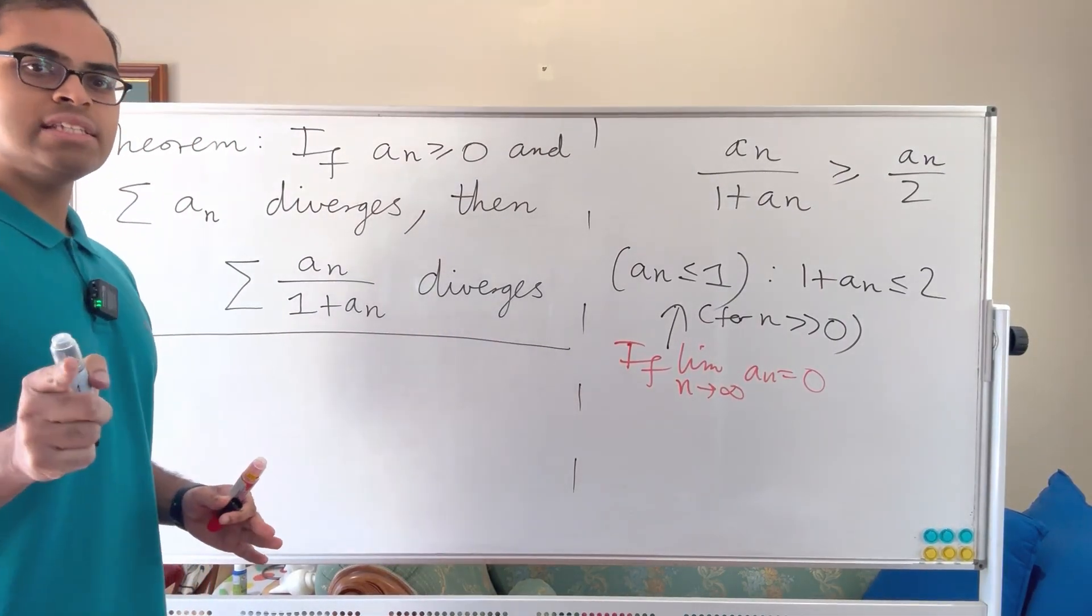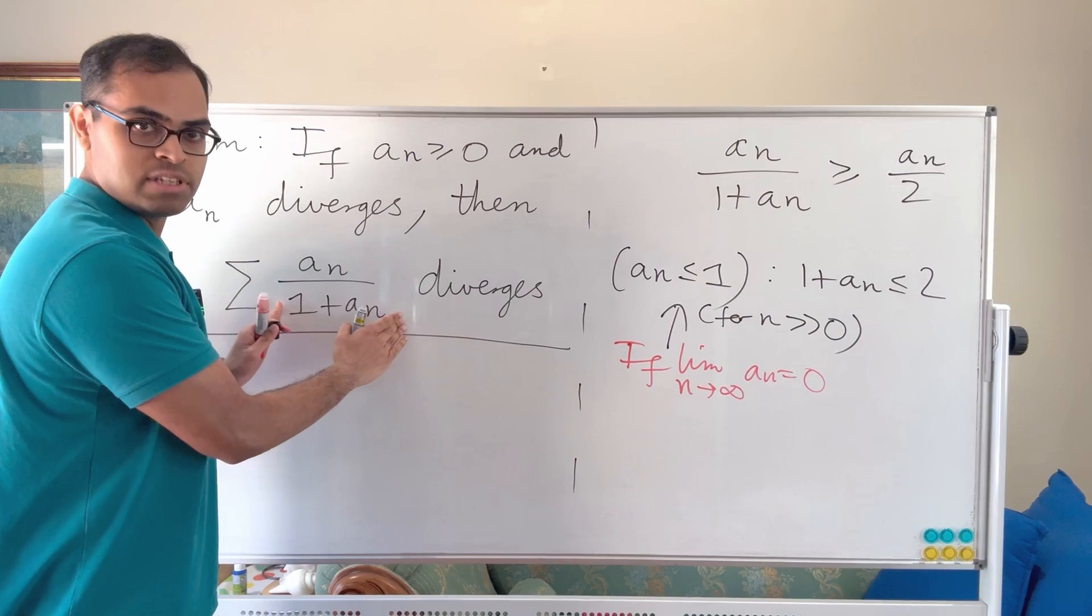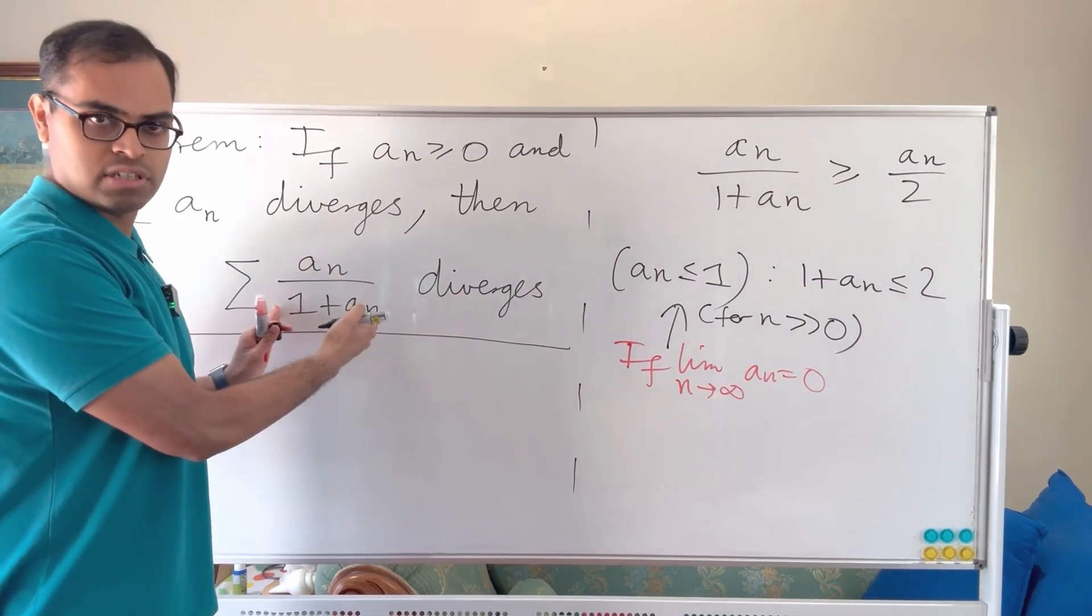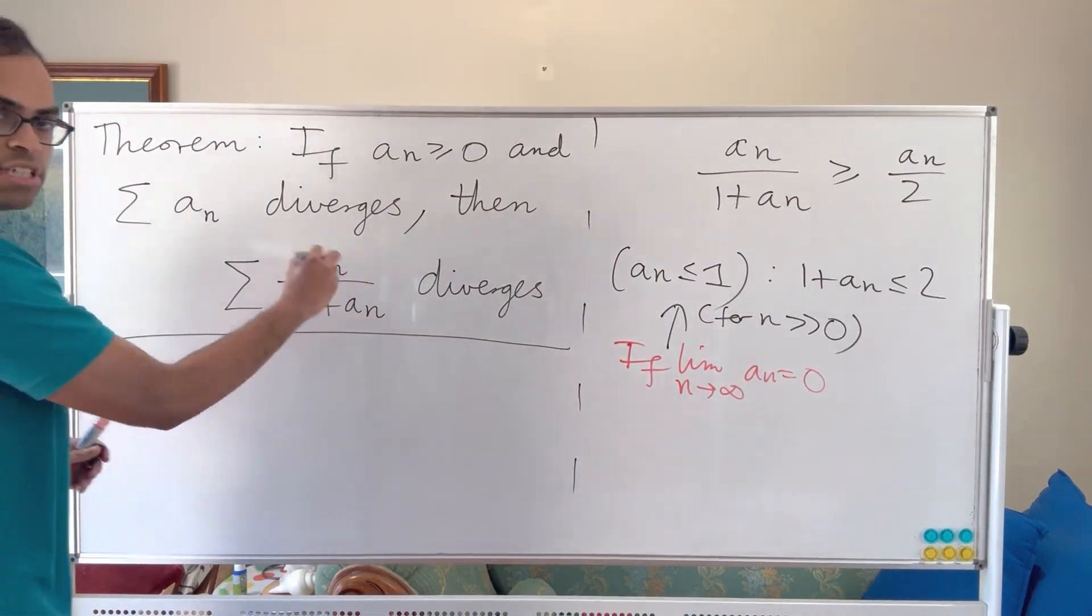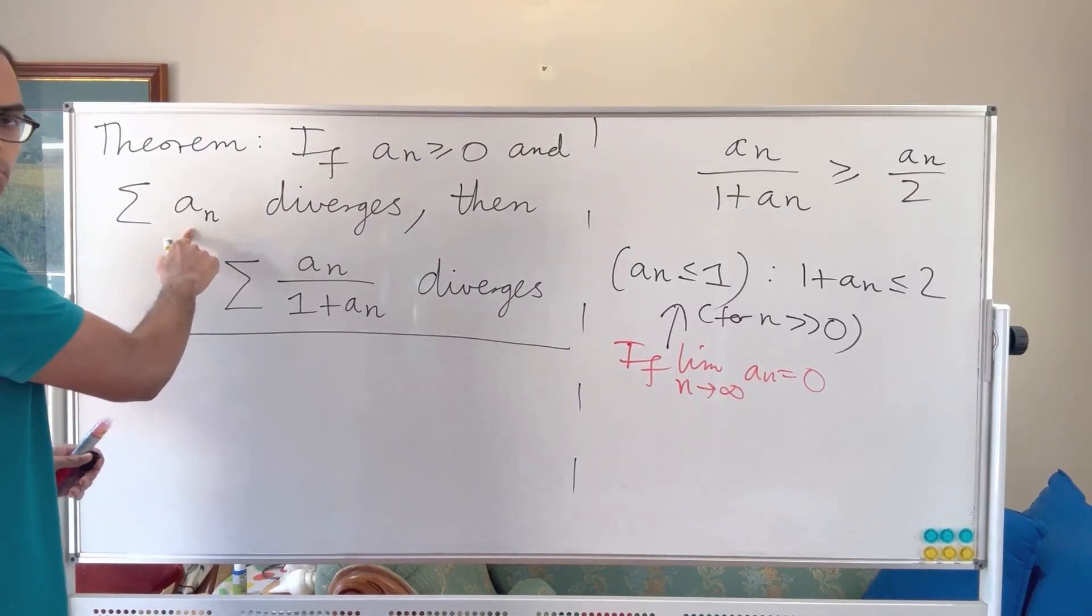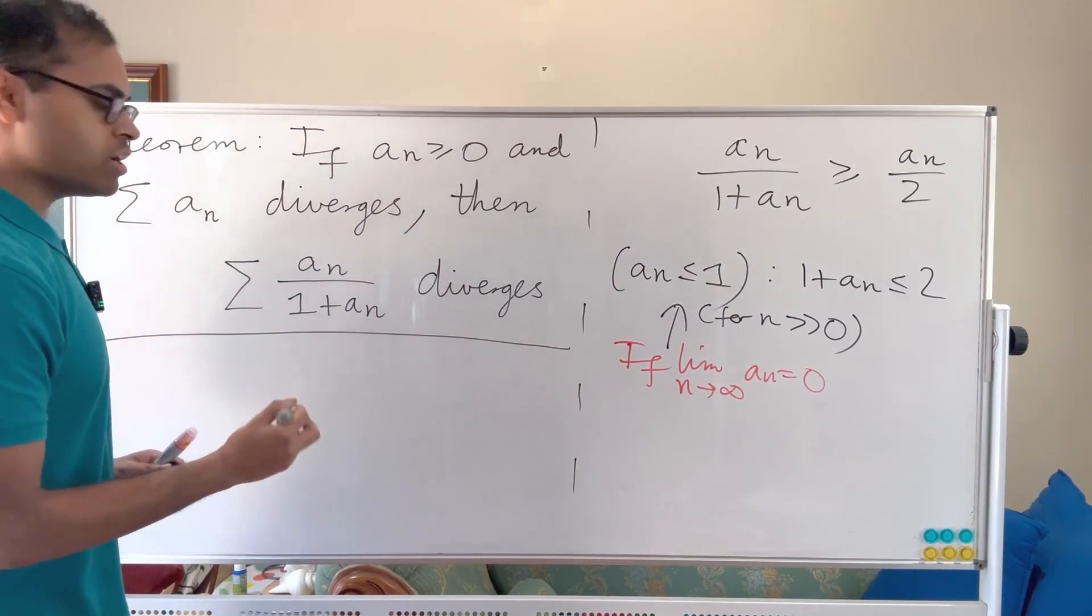So let's now understand, knowing that the limit of the terms is 0, assuming that, because if it's not then it diverges. So assume that this limit of the terms is 0, what does it tell us about the limit of the terms an? Let's look at that.